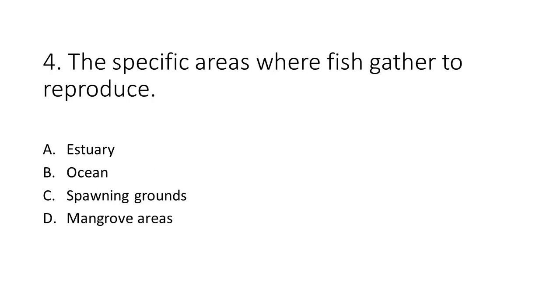Number 4. The specific areas where fish gather to reproduce. a. Estuary. b. Ocean. c. Spawning grounds. d. Mangrove areas.